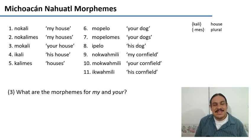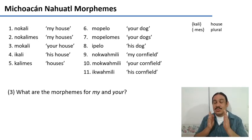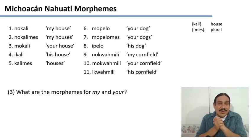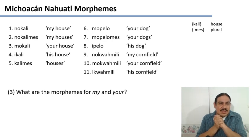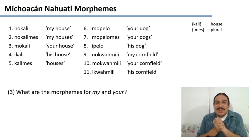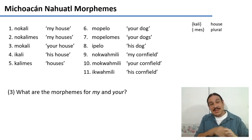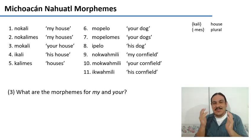So, by now you've seen the technique. We compare words and try to find the two words that are most like each other, except for the elements we're looking for. For example, we have words like 'my house' (number one), 'my houses' (number two), and 'my cornfield' (number nine). Try to group those together and figure out what they have in common. Also, try to do the same thing with the words that mean 'your house.' Please pause the video.